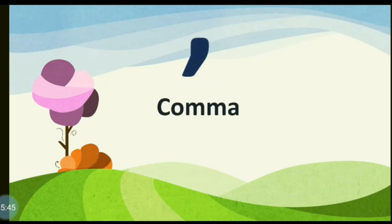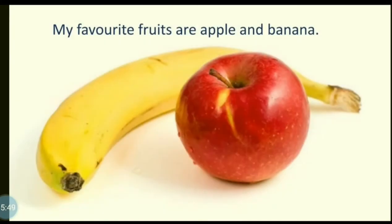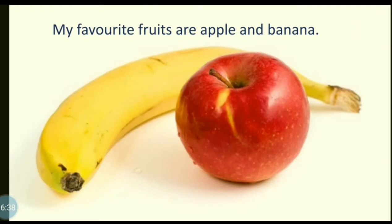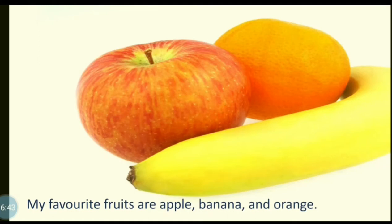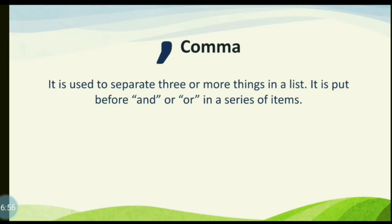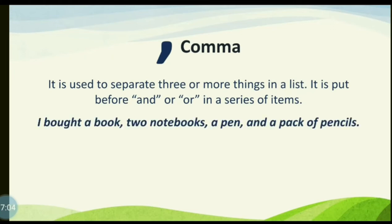Now we move on to the comma. In the sentence 'My favorite fruits are apple and banana,' no comma is needed. But in 'My favorite fruits are apple, banana, and orange,' commas are used. A comma is used to separate three or more things in a list; it is put before 'and' or 'or' in a series of items. Example: 'I bought a book, two notebooks, a pen, and a pack of pencils.'